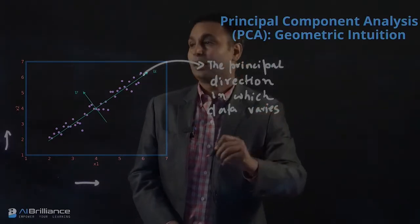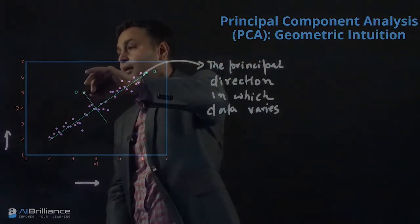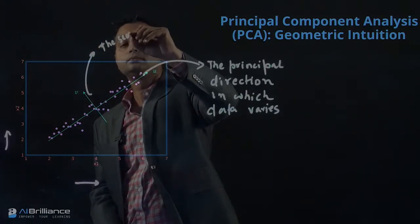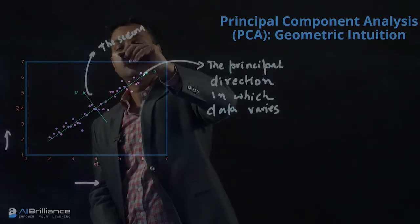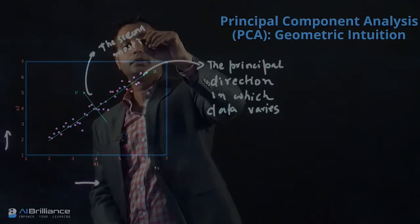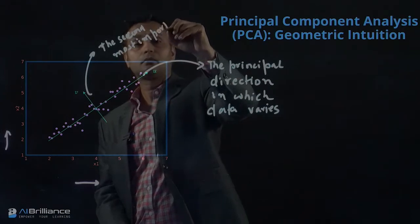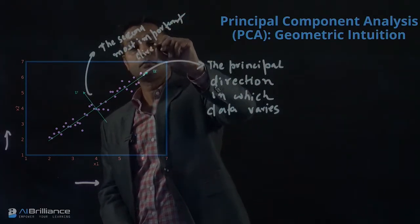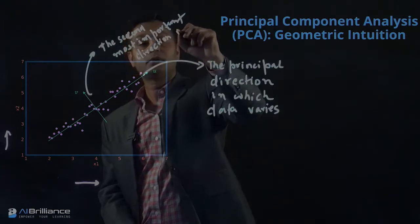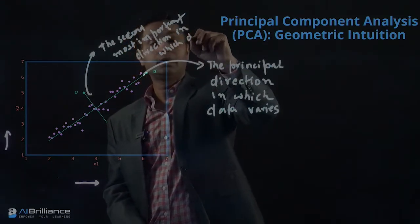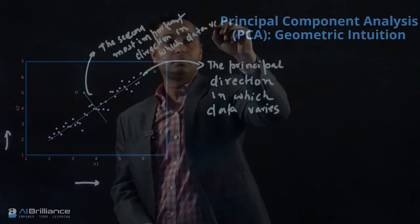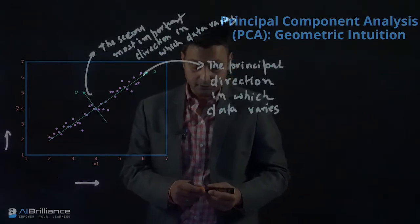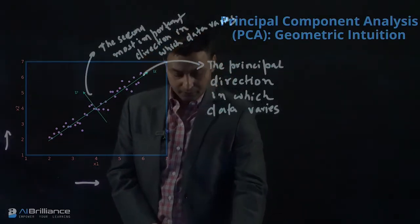Now if you look at v, that is the second most important direction in which the data varies. So those are the two different units or directions in which the data varies.